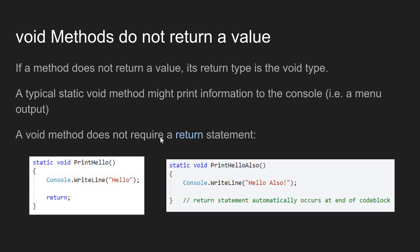A void method does not require a return statement, but you can include a return statement in a void method. Here I have a void method whose job is to just print the string of text 'hello.' The method is declared as static, which means I call it by just typing its name. It is a void method because it is printing data to the console but isn't returning a value back to the calling method. The name of the method is PrintHello.